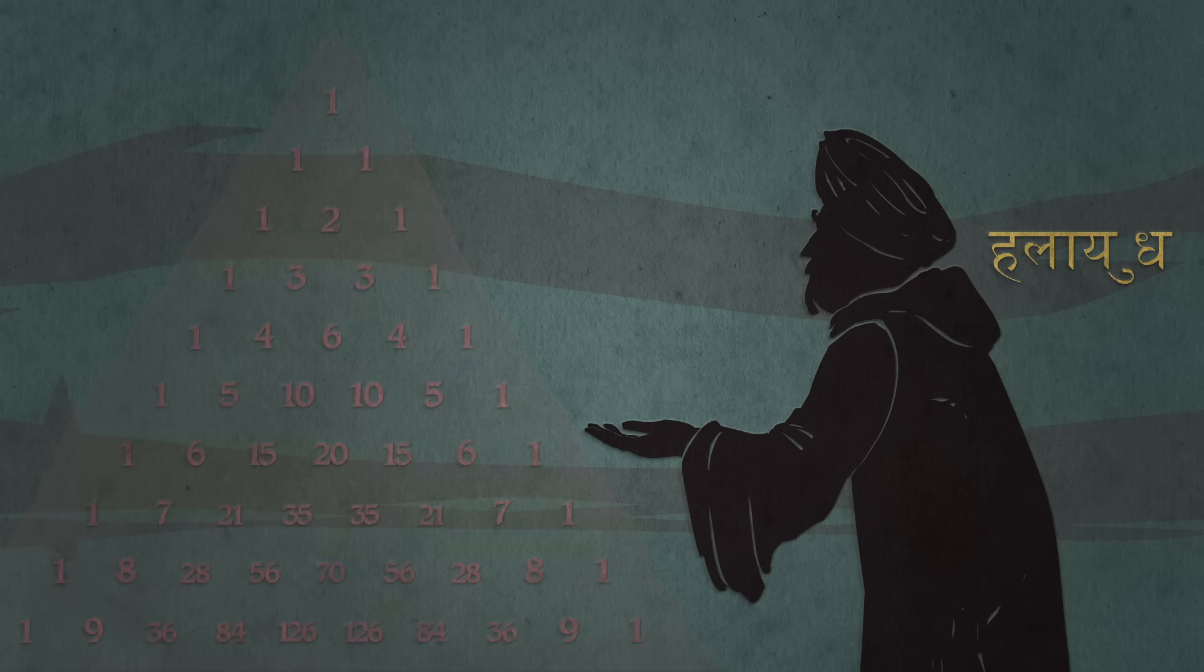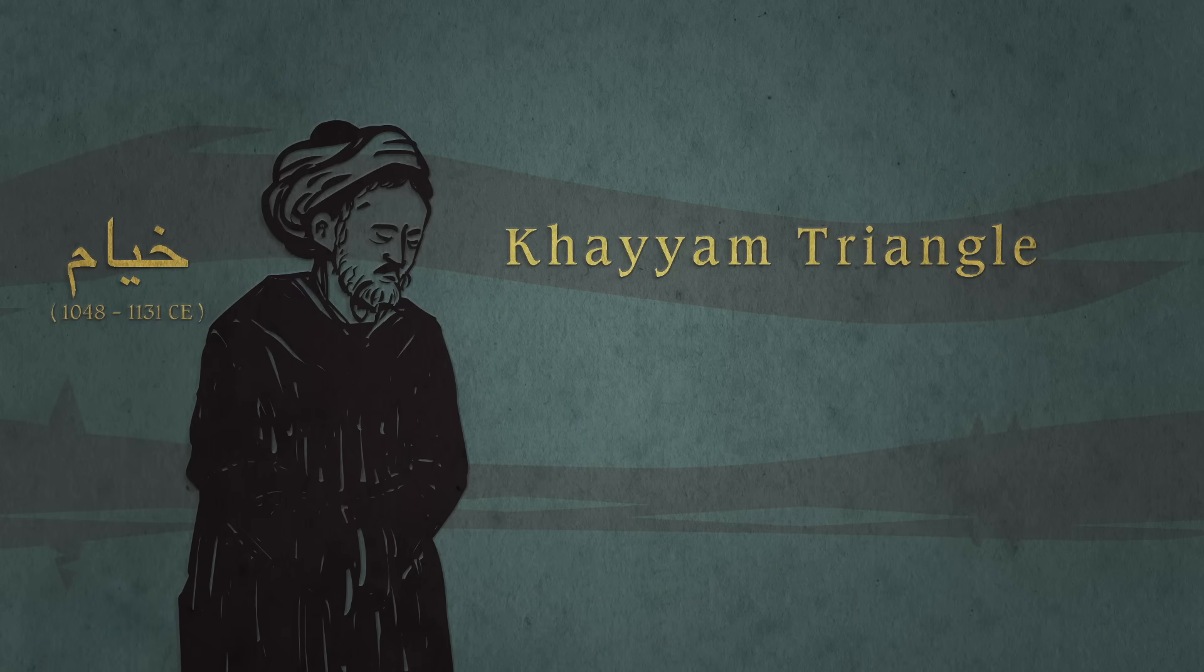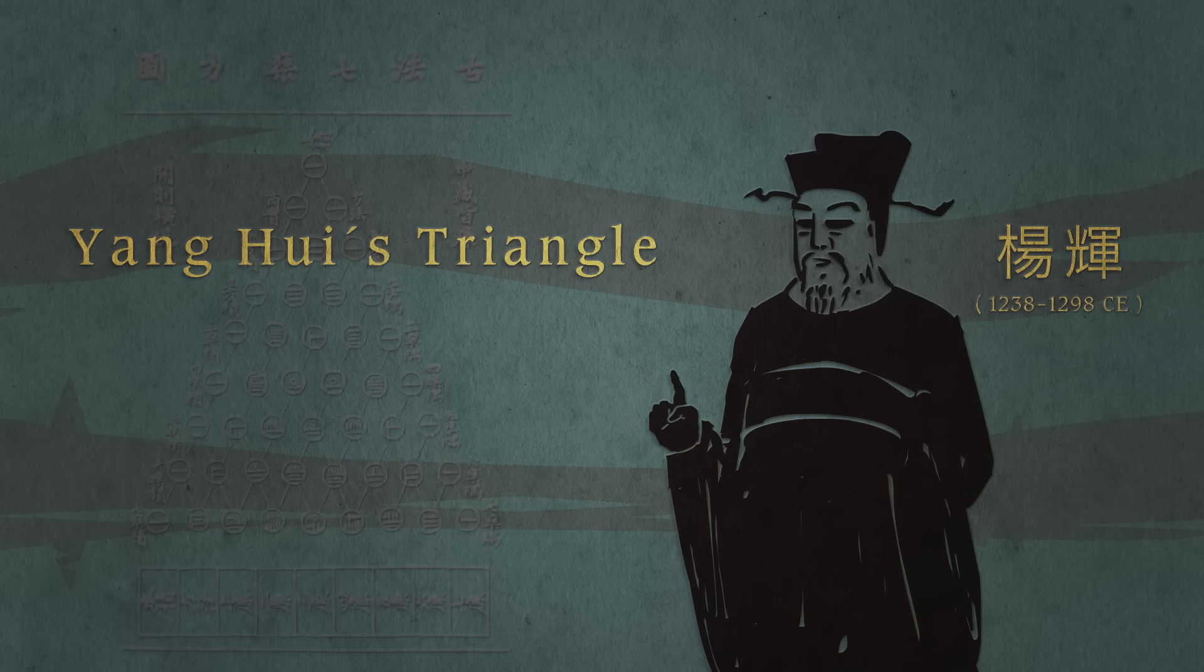Indian mathematicians called it the Staircase of Mount Meru. In Iran, it's the Khayyam Triangle, and in China, it's Yang Hui's Triangle.